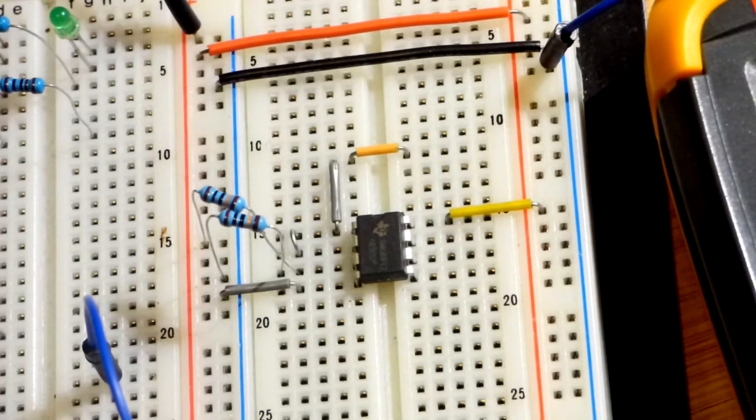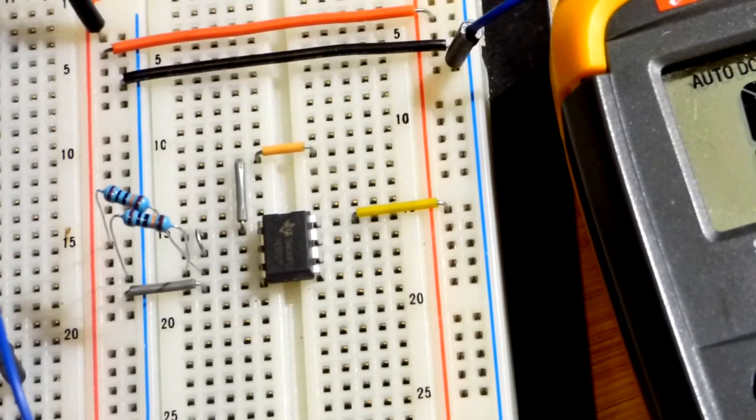And it is really that simple to get a virtual ground. So we have a halfway point, which now we call zero volts. We can go 9 volts more positive or 9 volts more negative.